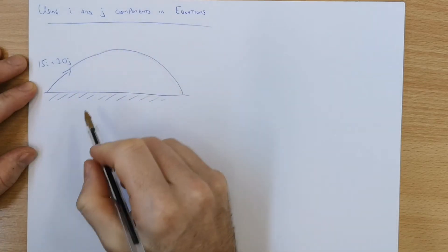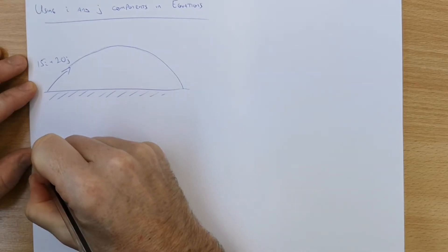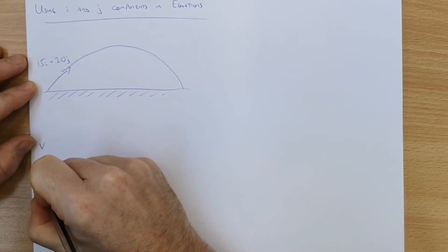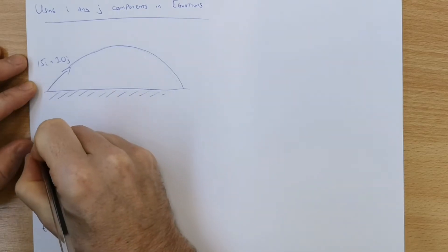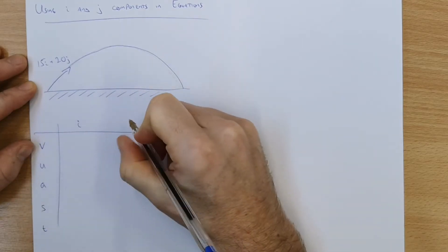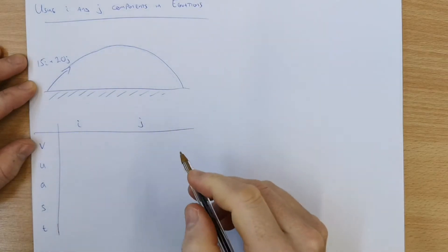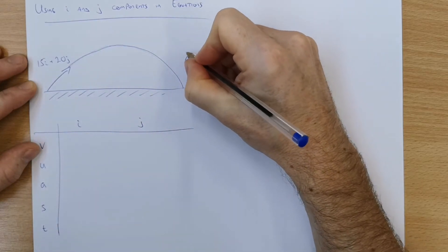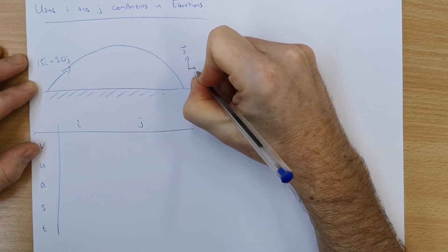Now how can we figure out what the different components are. So let's remember these are our five variables: v, u, a, s, t. And we'll have the i component and the j component. Now in this case j is going this way and i is this way.